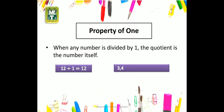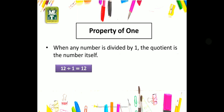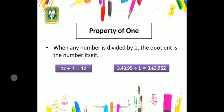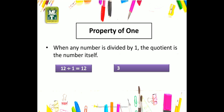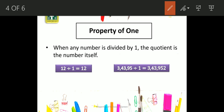دوسری example: 3,43,952 جب ہم اس کو one سے divide کرتے ہیں تو جو ہمارا result ہے وہ واپس وہی number ہوتا ہے — 3,43,952 واپس آیا۔ یہاں پہ 2 missing تھا، sorry — here it is 2. تو جب ہم نے اس کو one سے divide کیا، ہمارا number واپس وہی آیا۔